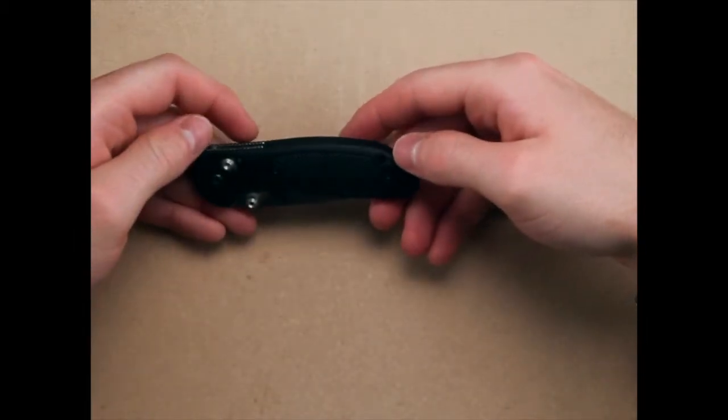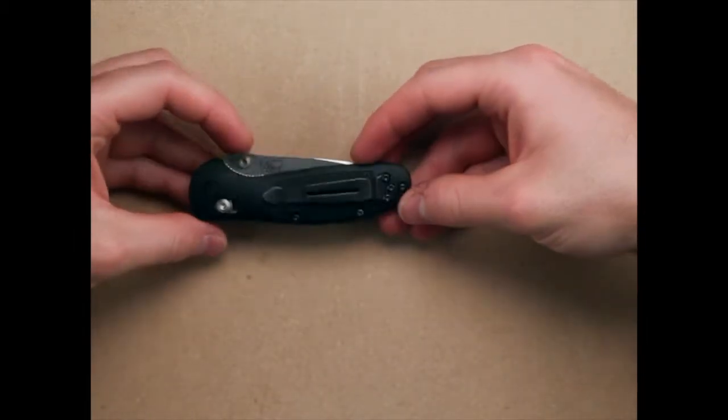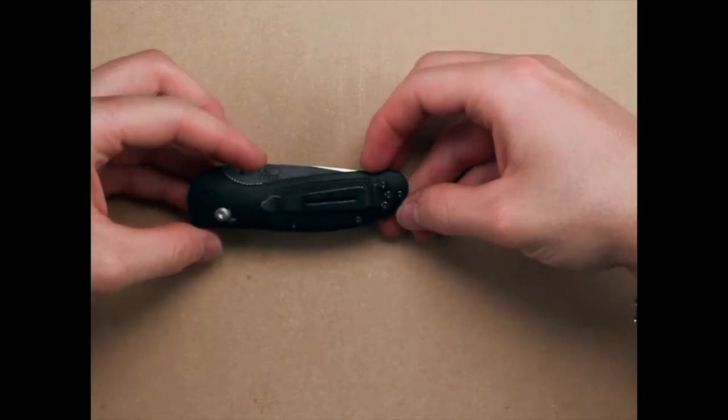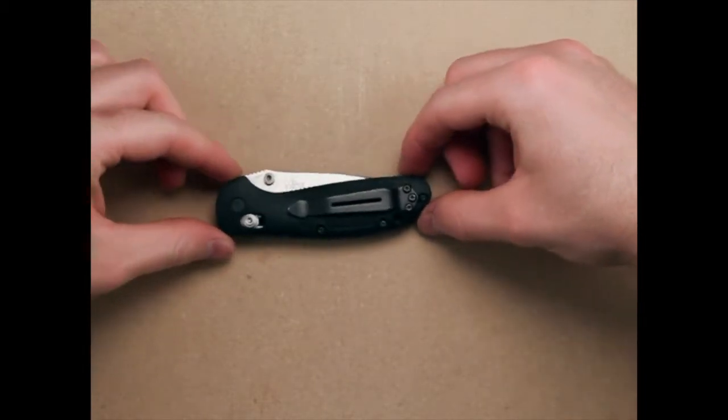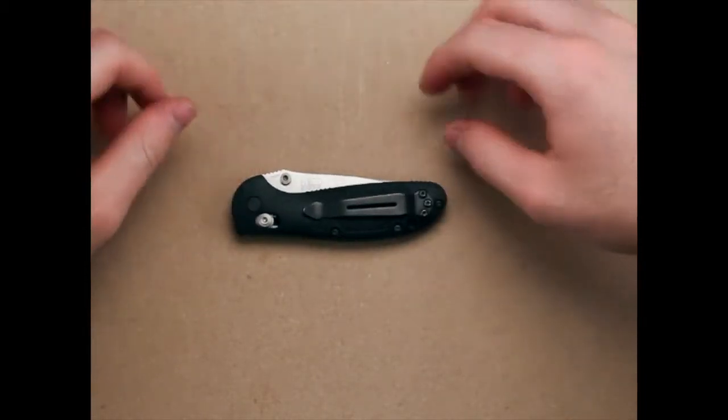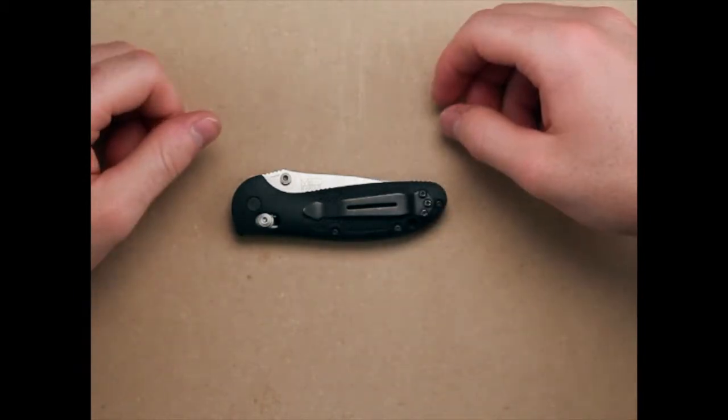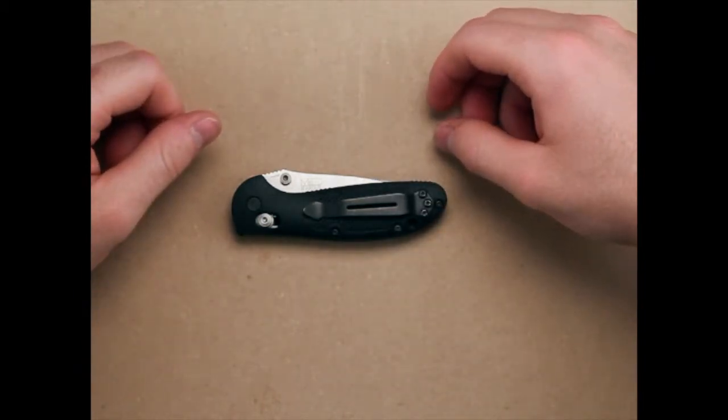The pocket clip is tip-up only, but you can swap it left or right-hand side. It usually comes from the factory—if you buy the stock ones, if you don't do a custom Mini Griptilian on their website—if you just buy a stock 556.